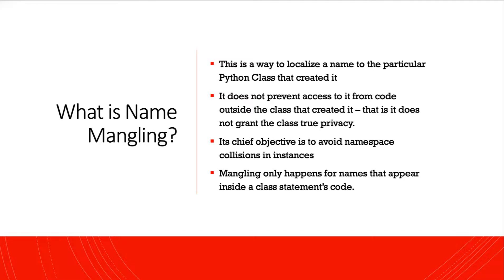Name mangling is a way to localize a name to the particular Python class that created it. It doesn't prevent access to it from code outside the class that created it. That is, it doesn't grant the class true privacy in the sense of the word. Its chief objective is to avoid namespace collisions in instances.